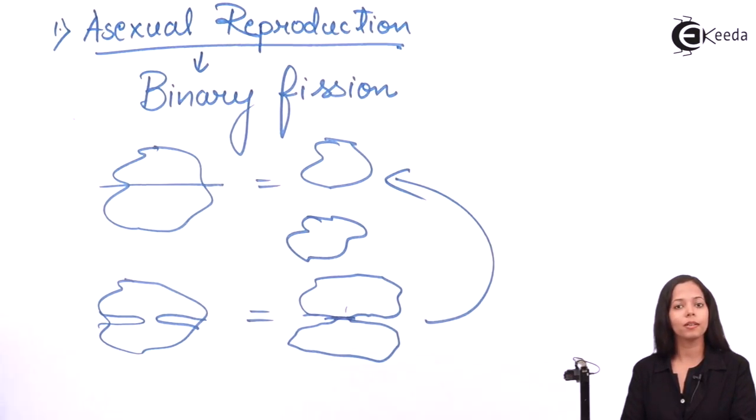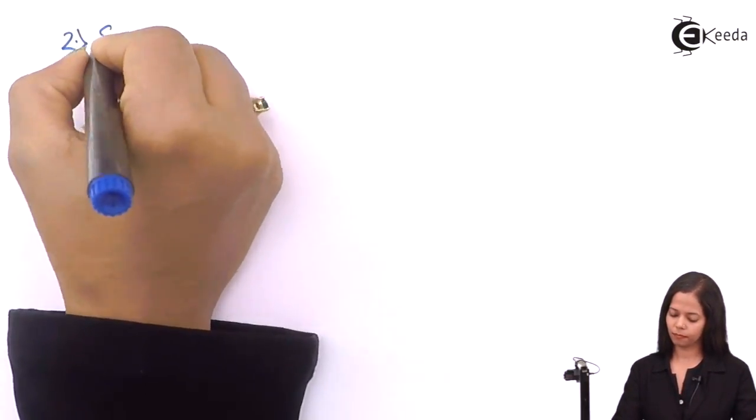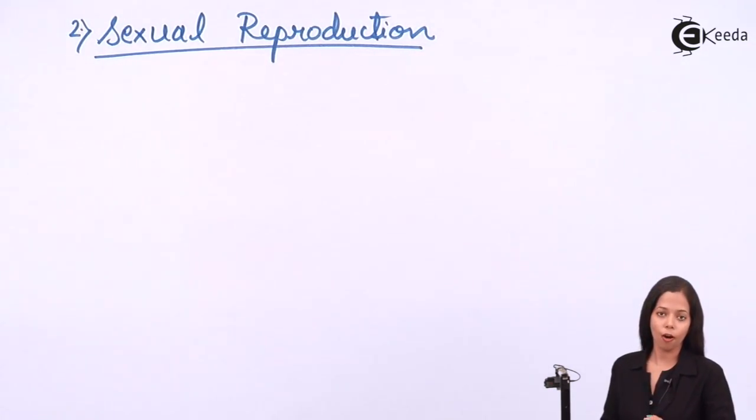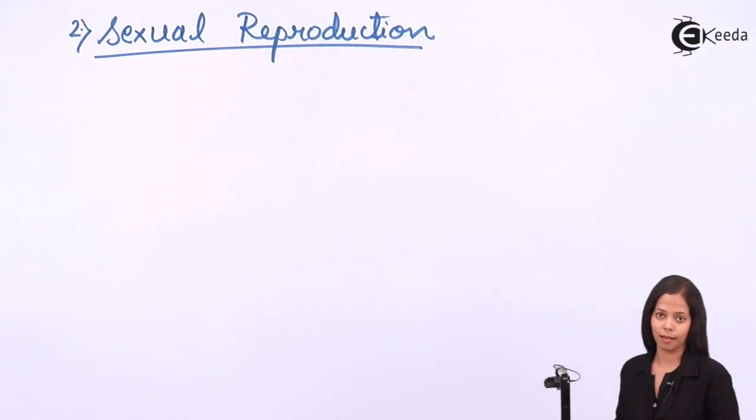Now we study how sexual reproduction occurs in protista. We completed the asexual process. What is the concept of sexual reproduction? There should be two cells: one is male gamete and another is female gamete. The male gamete is sperm and the female gamete is ovum. These two cells should fuse, and the process of fusion is called fertilization. Once these cells fuse, the structure formed is called zygote. If this happens, then the process is called sexual reproduction.